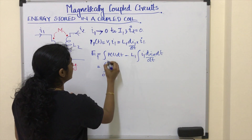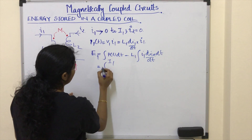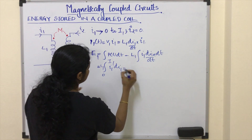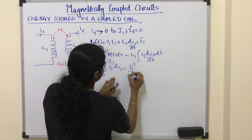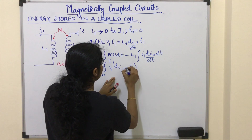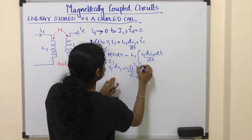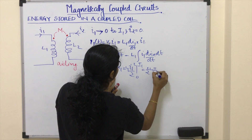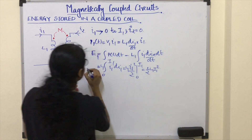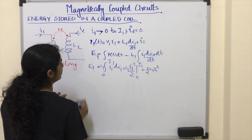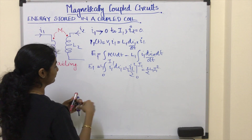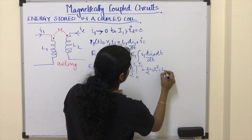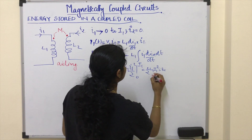Putting in the limits 0 to I1: L1 times integral of I1 dI1, which gives I1²/2. So E1 equals half L1 I1 squared. This is equation number 1.